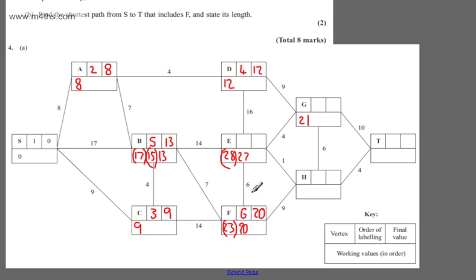We now consider all of the unconnected vertices that we can directly connect from F. 20 plus 6 gives 26, so we update that one. 20 plus 9 gives a working value of 29. Now considering the lowest weight: we've got 26, 21, and 29. It becomes G — G is order 7 and we put 21.